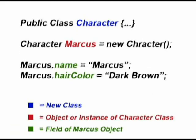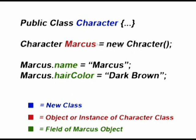Let's create some fields and give an example of how to set a field of a character. I created a public class of character, then I created a new character called Marcus. Then I defined some of his fields, such as the field name. I set Marcus.name equal to "Marcus" — and because it's a string, you have to enclose it in quotation marks. And Marcus.hairColor equal to "dark brown" — also enclosed in quotation marks, creating a string. That's how you would set a field. The new class is in blue, the new object of that class is called Marcus, and these lines define Marcus's name and hair color using fields.